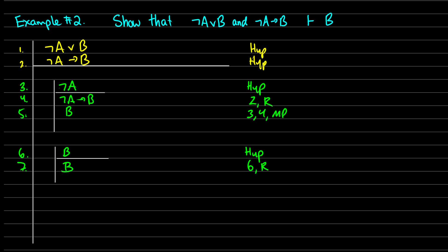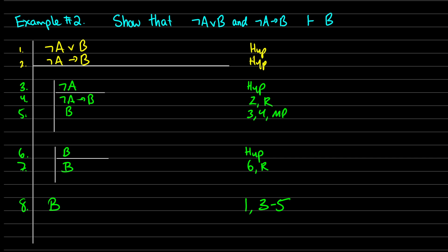The second sub-proof on line six assumes b. Since I've assumed b, I get b back — I just reiterate b from the assumption on line seven. At this point: if we assumed ¬a we got b; if we assumed b we got b; and we had the initial condition ¬a∨b. So no matter which disjunct is true, we get b. Therefore on line eight I can claim b is in fact true, justified by line one, sub-proof lines three to five, and sub-proof lines six to seven — all by disjunction elimination.